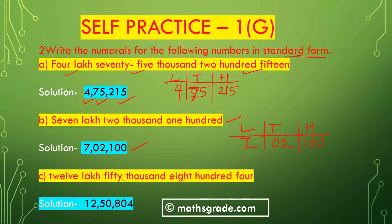Part (c): 12 lakh 50,804. In the Indian system of numeration we place 2 digits in the lakh place, 2 digits in the thousand place after the comma, and 3 digits in the hundred place after the comma. In the lakh place the number is 12, in the thousand place it is 50, and in the hundred place it is 804. So the number is 12,50,804 — twelve lakh fifty thousand eight hundred four.